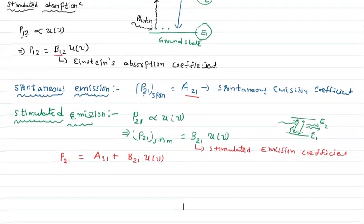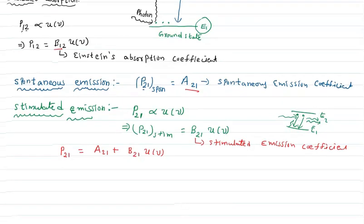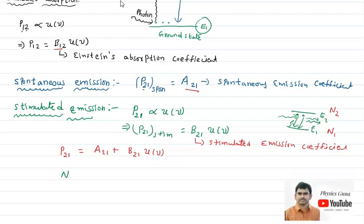For obtaining the relation, we consider atoms in the ground state and in the higher energy state. N1 is the number of atoms per unit volume taking transition from energy level E1 to energy level E2 per unit time. The number of such transitions equals N1·P12, which equals N1·B12·u(ν). This is equation number 1.